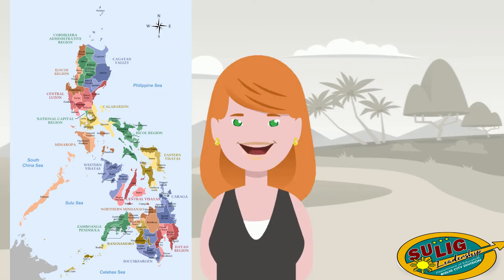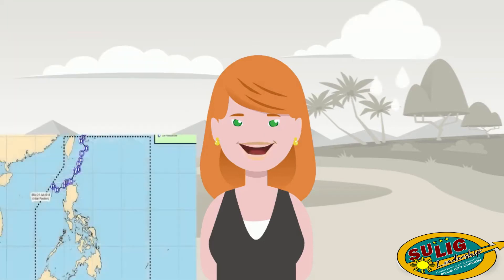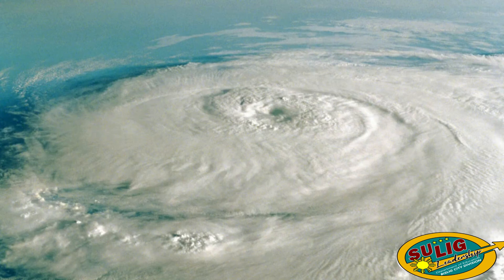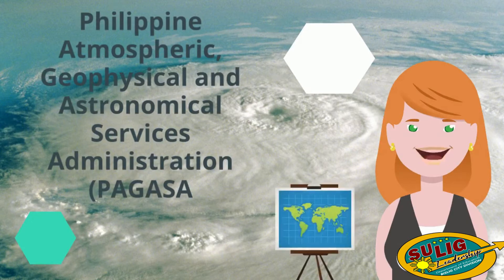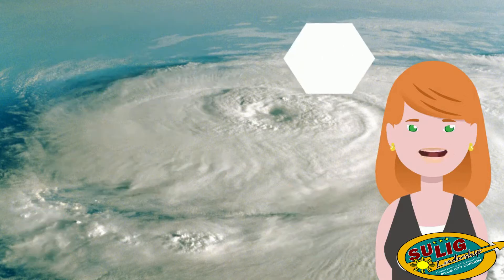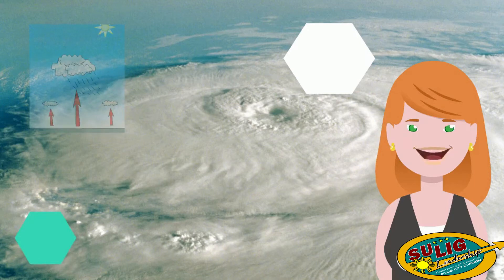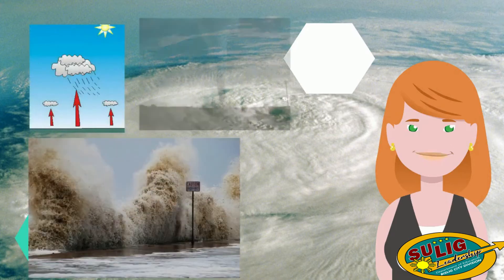Since typhoons are natural phenomena, we can't stop them, but we can prepare ourselves before they reach our place. Therefore, tracking their path is a big help. PAGASA tracks and forecasts the path of a typhoon every 6 to 12 hours over a period of at least 5 days. They use a variety of meteorological tools and methods to deliver accurate forecasts to determine the intensity, rainfall, storm surge, and tornado threat that will occur.